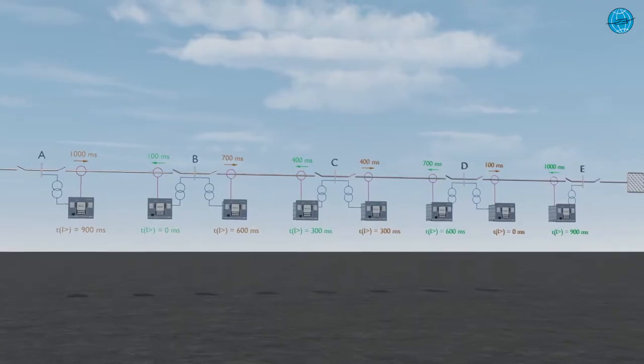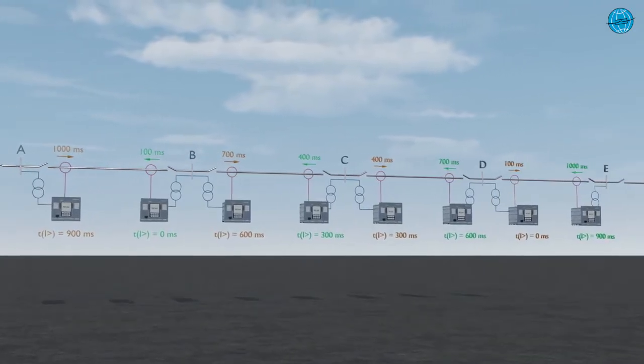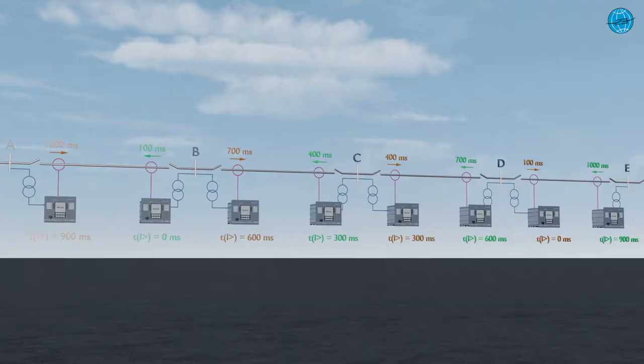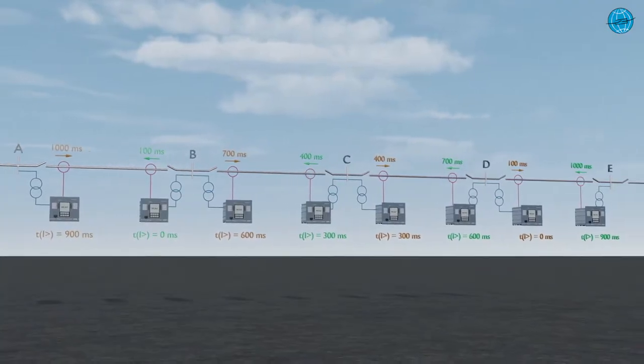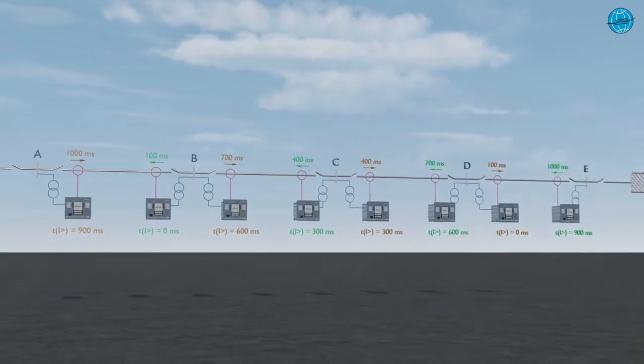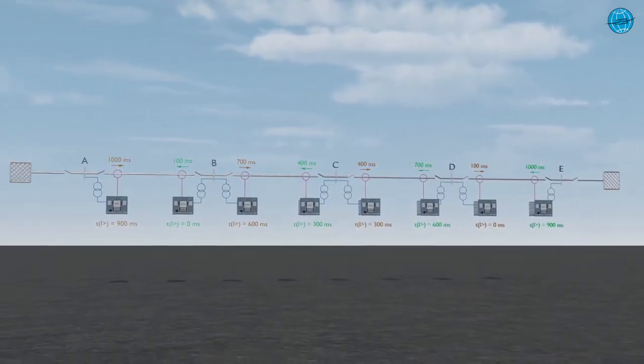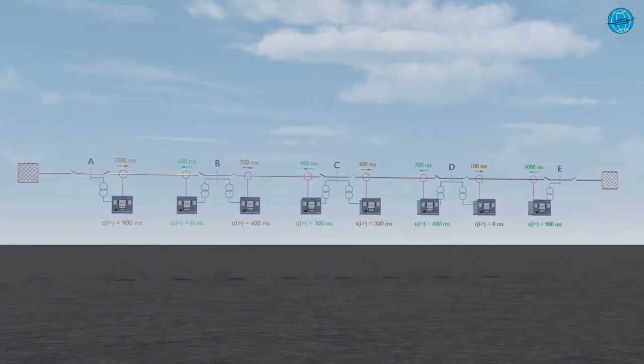And here, we can already see the main disadvantage. While the directional overcurrent protection can be set up easily and without communication connections, it already achieves error clarification times of 1 second with 4 line sections. Further line sections cannot be protected with this concept. In addition, the longest fault clearance times also lie on the line sections close to the feeder, where the greatest short circuit powers are located.